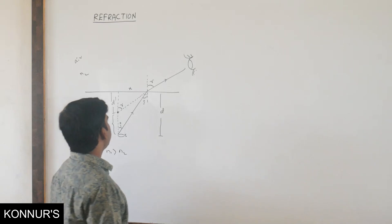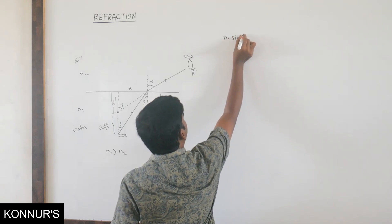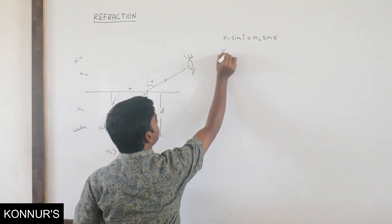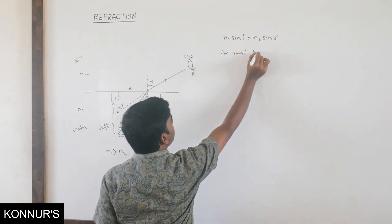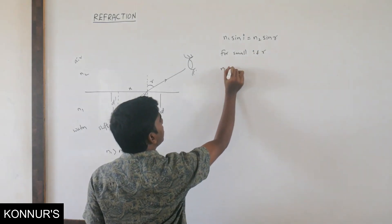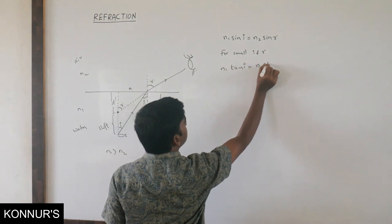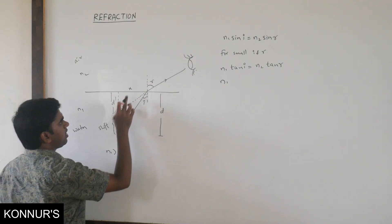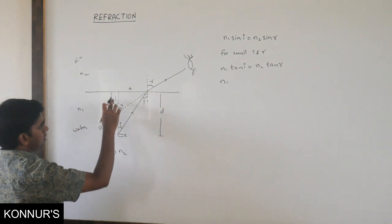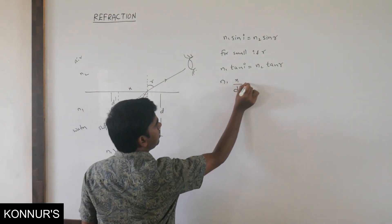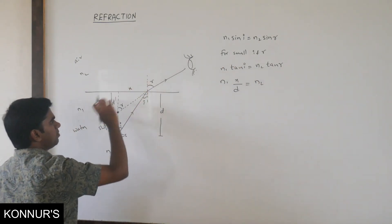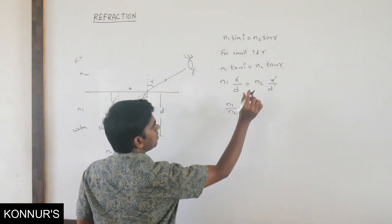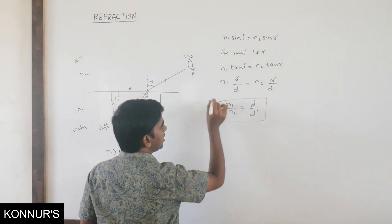Deriving the apparent depth formula: for small angles, N1 tan I ≈ N2 tan R. From geometry, tan I = X/D and tan R = X/D′, where X is the horizontal displacement. After cancellation, N1/N2 = D/D′. This is the general formula relating refractive indices and real and apparent depths.